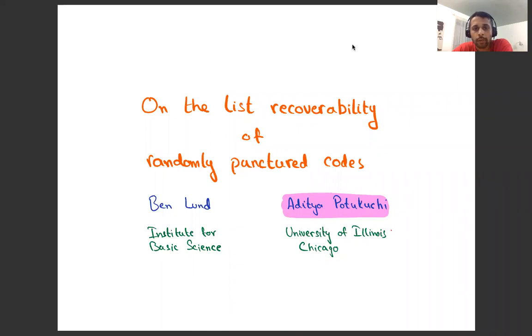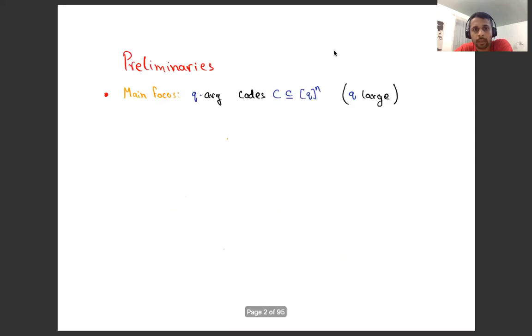Hi, I'm going to talk about the list recoverability of randomly punctured codes. This is joint work with Ben Lund. Ben is soon going to start his postdoc at Institute for Basic Science. First, some preliminaries.